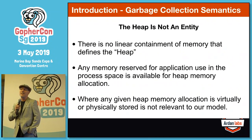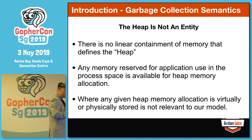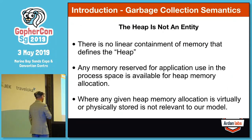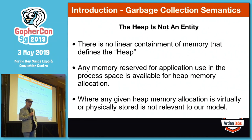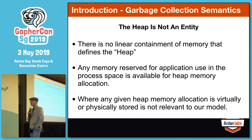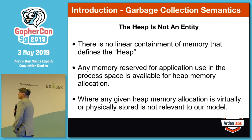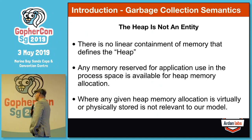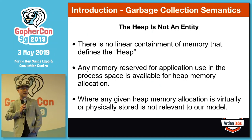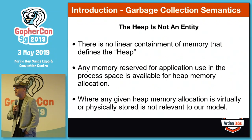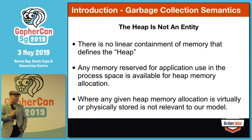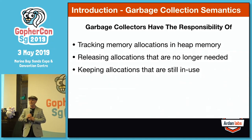The first thing: don't think of the heap as a thing or an entity. There's no linear containment of memory — it's not like the stack where we can picture a block of 2K memory in our head. Any memory reserved for the application is available for heap memory allocations. I really want you to think that the heap can almost be anywhere in that process space, and we absolutely do not care where it's physically stored — that's not going to help us better understand these behaviors.